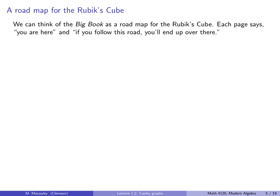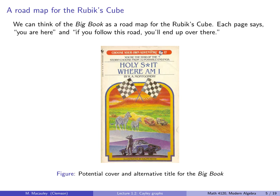Okay, so we can think of the big book as a roadmap for the Rubik's cube. Each page says you are here and if you follow this road, you'll end up over there. Does this sound familiar? You might be too young for this, but this is a choose your own adventure book. I'm actually not sure if these are still around. Probably not. So here's a potential cover and alternative title for the big book.